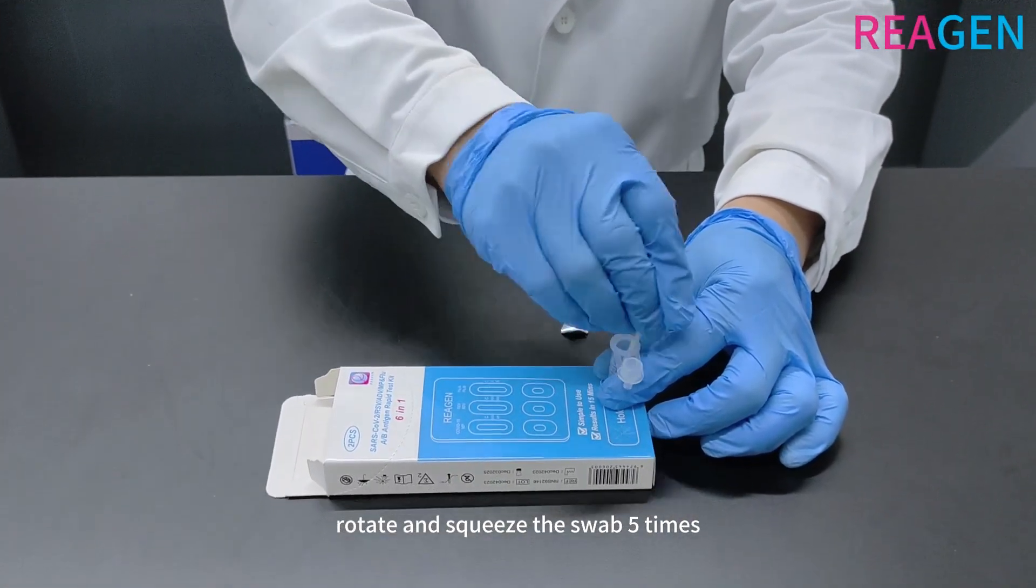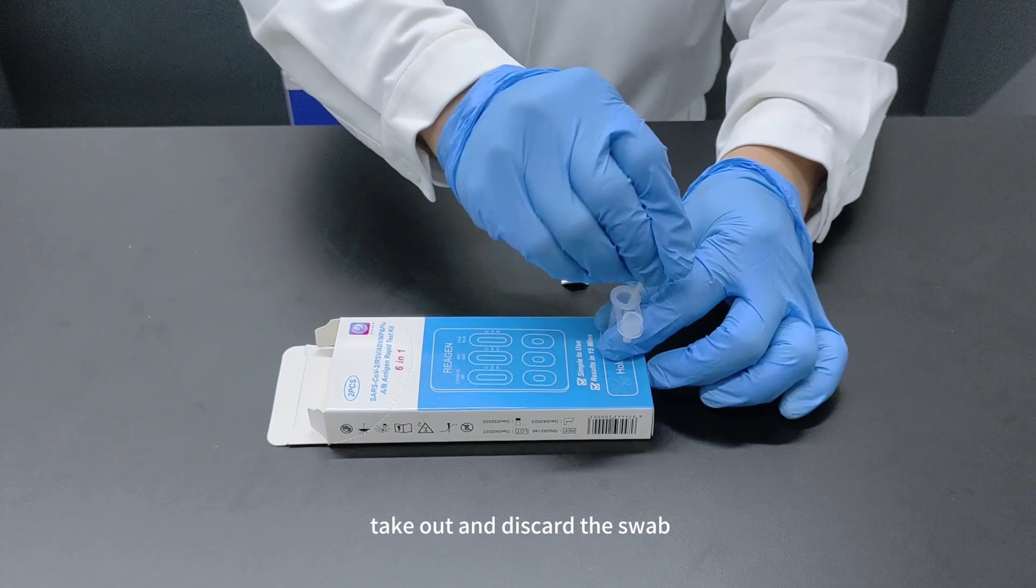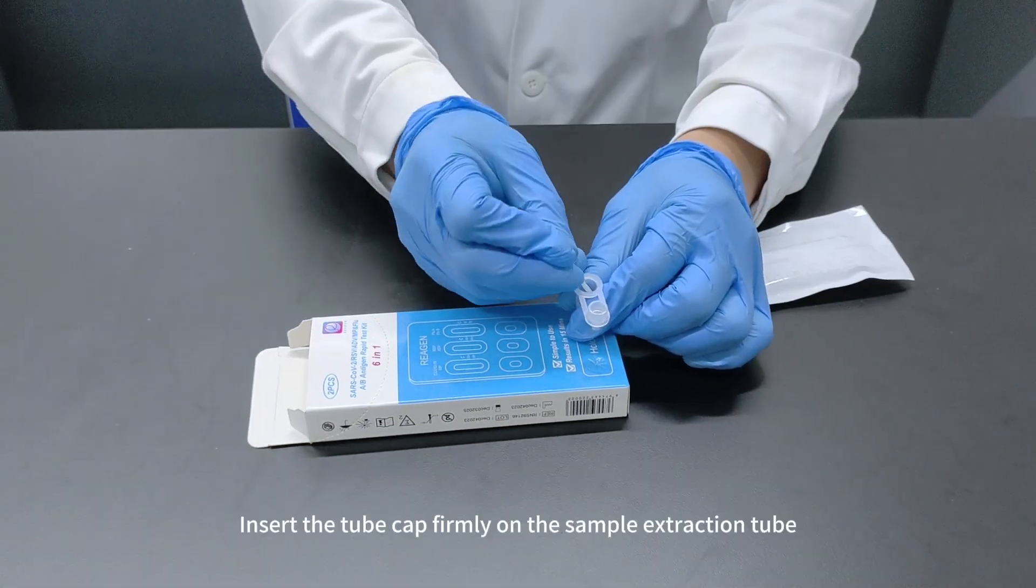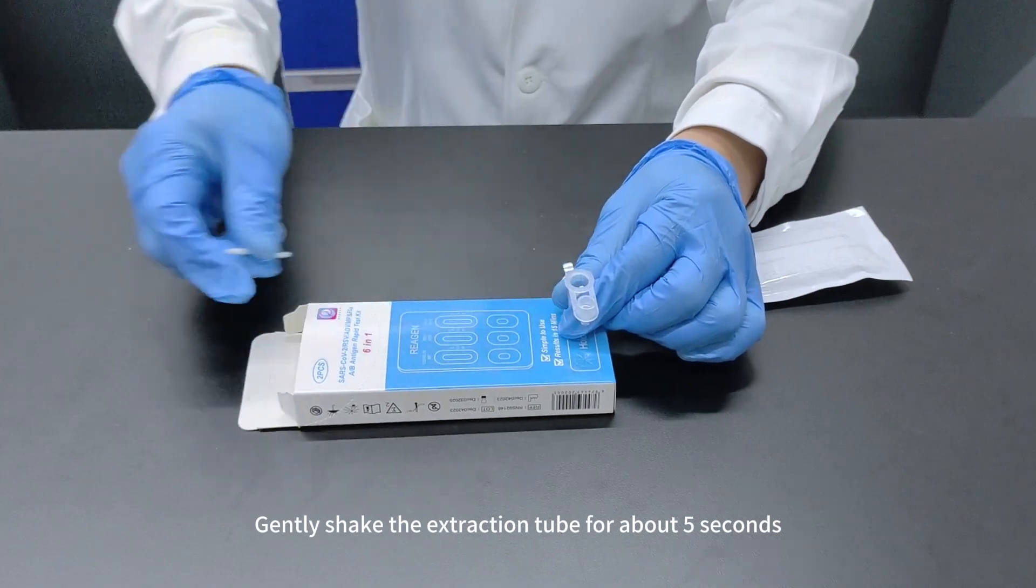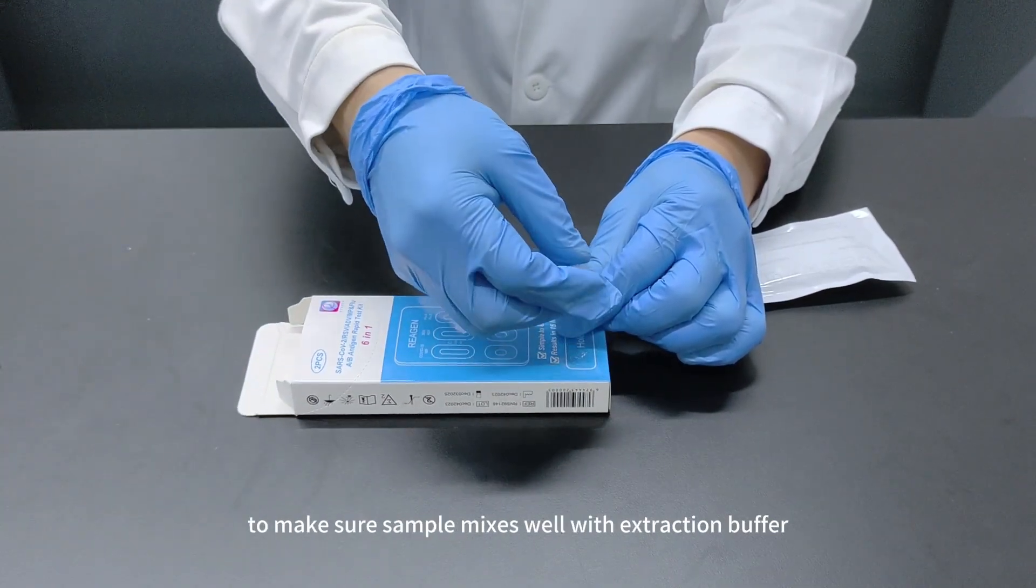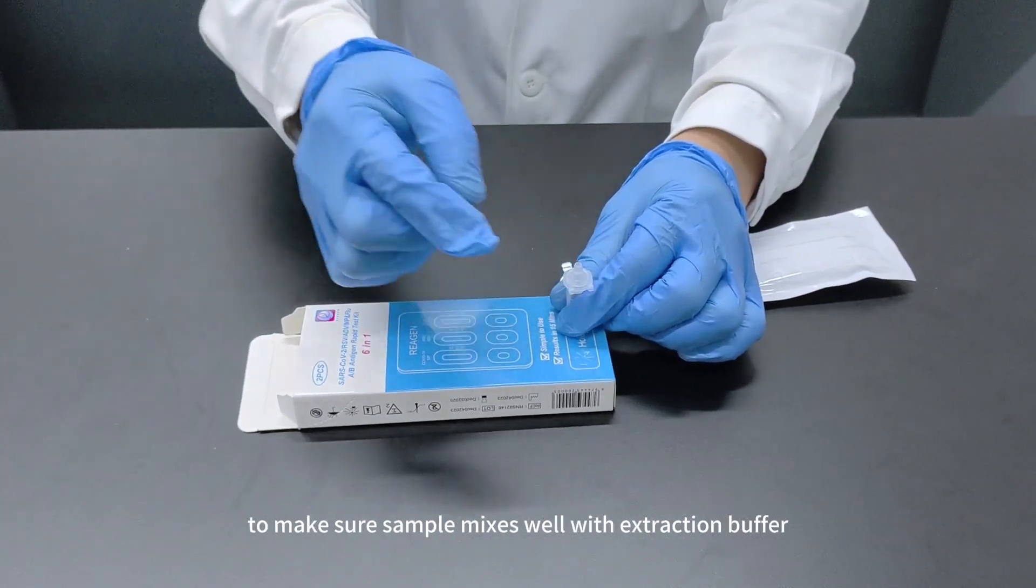Rotate and squeeze the swab five times. Take out and discard the swab. Step 3: Insert the tube cap firmly on the sample extraction tube. Gently shake the extraction tube for about five seconds to make sure sample mixes well with extraction buffer.